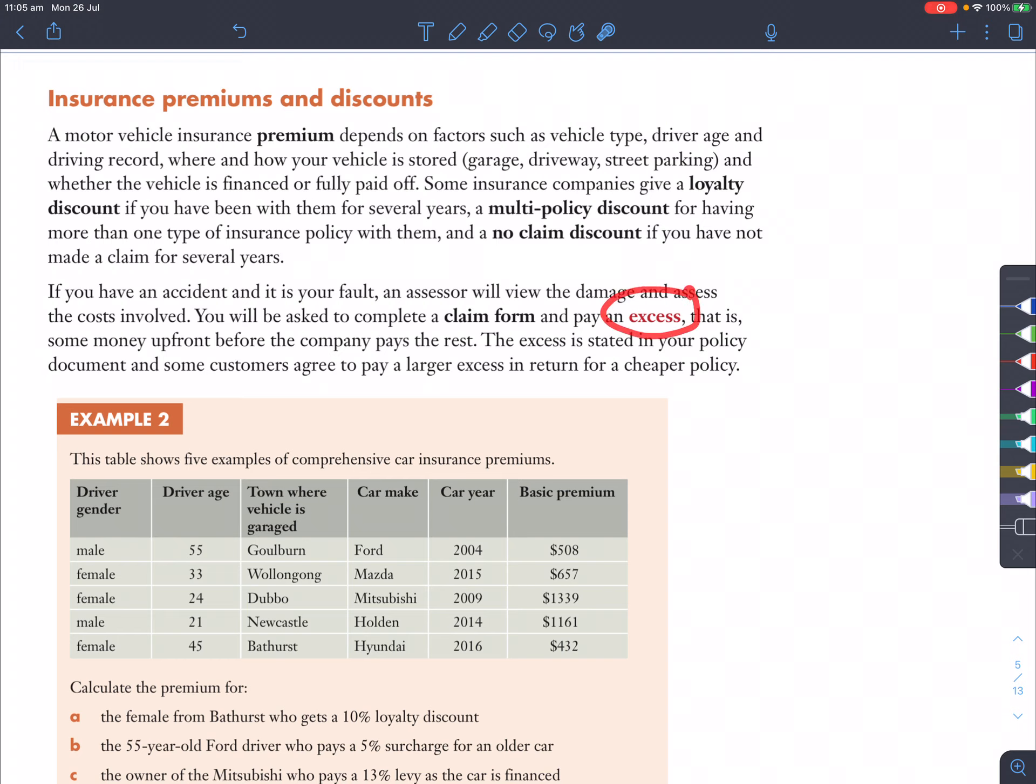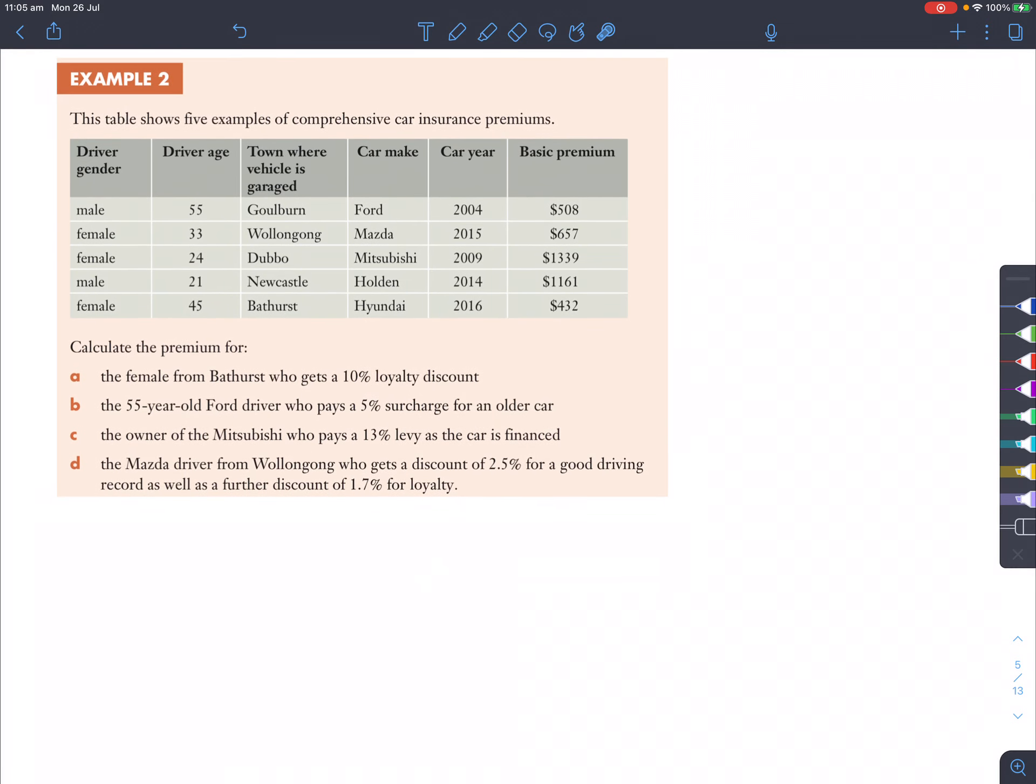So that is some money up front before the company pays the rest. The excess is stated in your policy document and some customers agreed to pay a large excess in return for a cheaper policy, which is nice. So, I'll give you an example. My excess is around $1,000, so if I crashed a Mercedes or something like that and the person told me to pay $4,000 to pay for their front bumper, I don't have to pay that. I just pay $1,000 to my insurance and the rest of it, which is $3,000, will be covered by them. So that's a good thing.